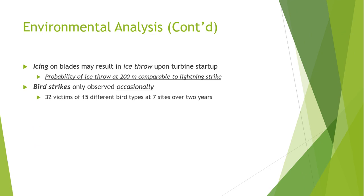There is an effect known as ice throw. Under certain meteorological conditions, icing may occur at the blades of the wind turbine, which may become loose or fall off during startup. The risk of icing mainly depends on the respective site conditions — for example, low or high mountain ranges. The risk of ice throw at a distance of approximately 200 meters is comparatively low and almost equal to that of a lightning stroke.